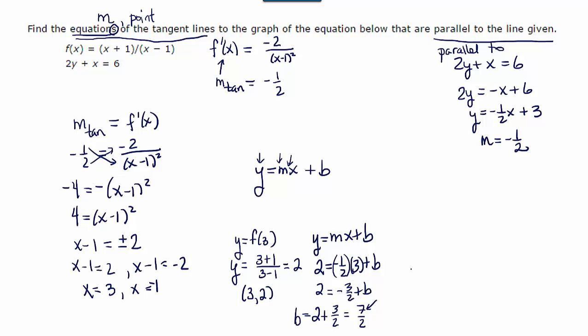So we now have our b and we know m. So the first tangent line, the one that corresponds to the point (3, 2), is going to be y = -½x + 7/2. That's the first equation, but there are two.